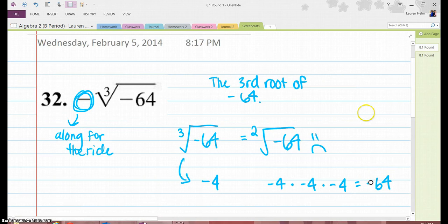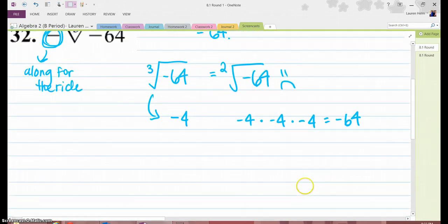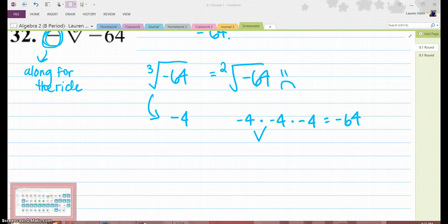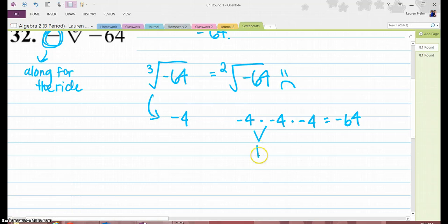If it was the square root of negative 64, you wouldn't be able to do it because negative 4 times negative 4 would be positive 16.